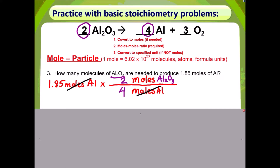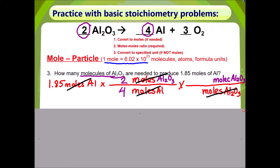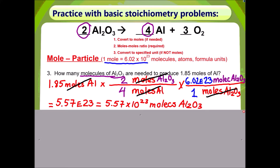Step 3: convert to specified unit if not moles. The question is asking for molecules of aluminum oxide. Therefore, I need to get rid of moles of aluminum oxide by putting it on the bottom so it cancels out, and put molecules of aluminum oxide on top to answer the question. The numbers come from the mole conversion factor, where 1 mole of aluminum oxide equals 6.02×10²³ molecules of aluminum oxide — entered as 6.02E23 on your calculator. Multiplying across the top and dividing by the bottom gives 5.57E23, which is the same as 5.57×10²³ molecules of aluminum oxide.